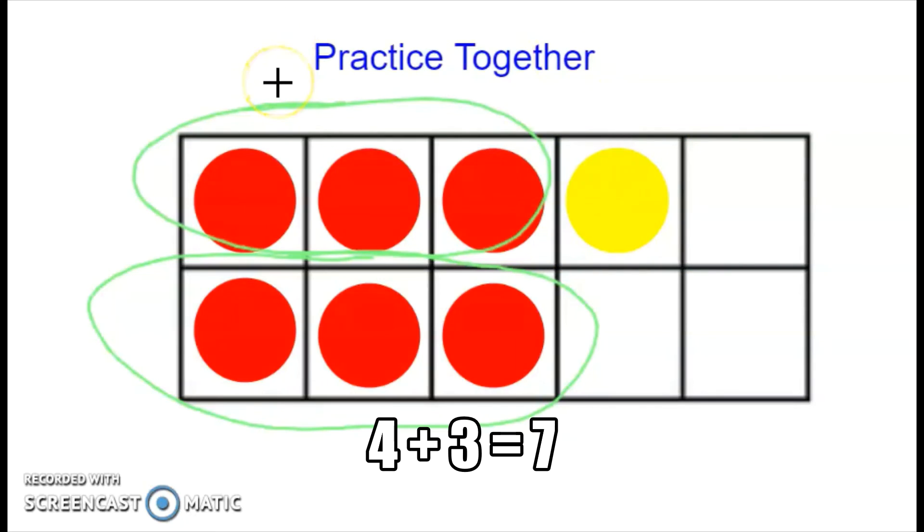This is a doubles plus one. We have three plus three, which is the doubles, plus one equals seven. And that's how I can use the double strategy to help me count more quickly and to help me solve more efficiently.